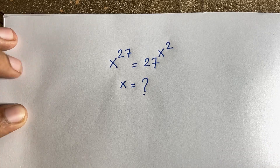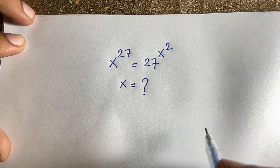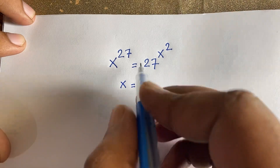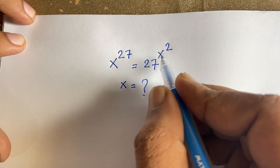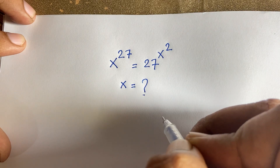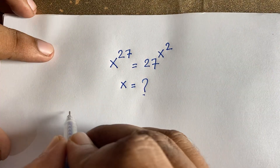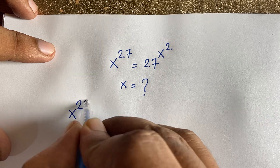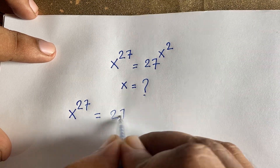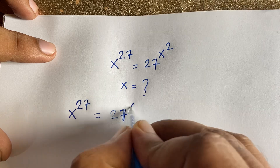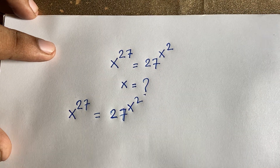Hello everyone. In this video, we have solved this interesting exponential equation: x to the power 27 is equal to 27 power x squared. What is x equal to? How to solve this question? So our question is x to the power 27 is equal to 27 power x squared.